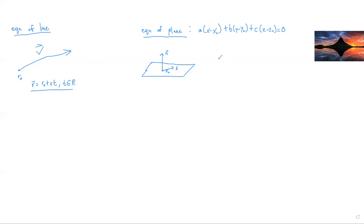And an equation of a plane is shaped in this form. So it has a vector X that's on a plane and a normal vector N. Then the equation is A times (x minus x-naught) plus B times (y minus y-naught) plus C times (z minus z-naught) is zero. And this makes sense because these are perpendicular, so the dot product of N and X would be zero.